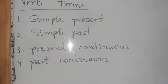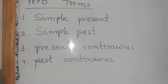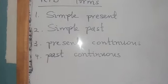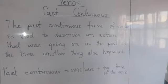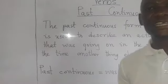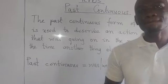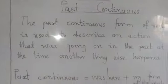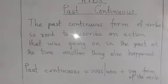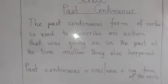Now, verbs can consist in various forms. As you can see in the book, we have outlined some few forms of verbs. We have the simple present, the simple past, the present continuous, the past continuous, and so on and so forth. But for the sake of today's lesson, we are going to look at the past continuous forms of verbs.